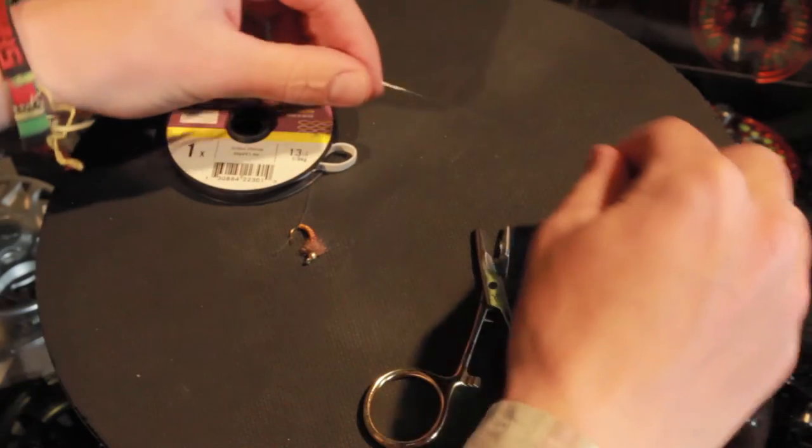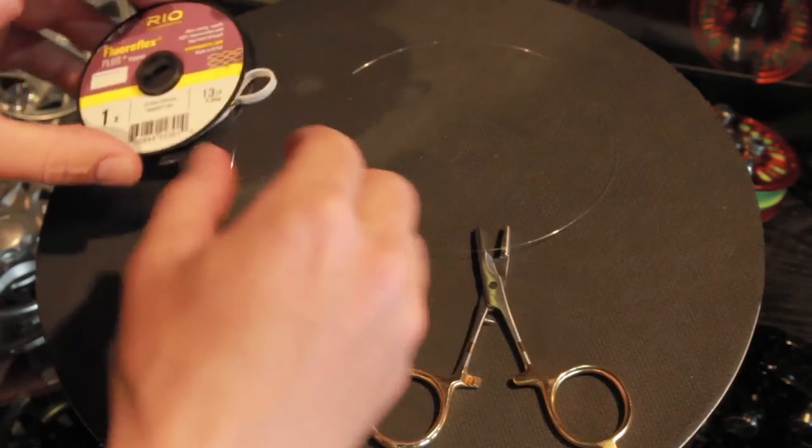First, for the double or triple surgeon knot, we're going to cut a piece of tippet 12 inches long.